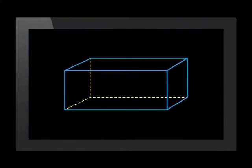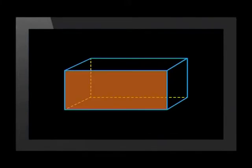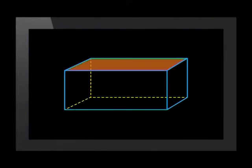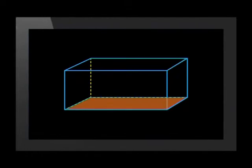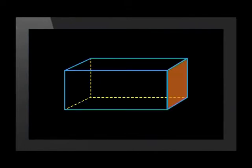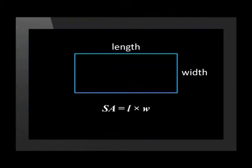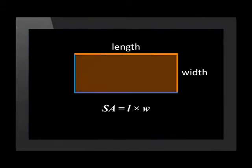A rectangular based prism has 6 faces, and each one of those faces is a rectangle. Once you have found the area of each side, you then add them together. Just a reminder: we find the surface area of a rectangle with the formula surface area equals length times width.